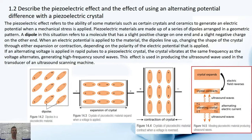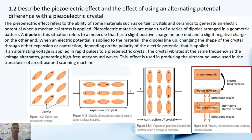Describe the piezoelectric effect and the effect of using an alternating potential difference with the piezoelectric crystal. The piezoelectric effect refers to the ability of some materials, such as certain crystals and ceramics, to generate an electric potential when mechanical stress is applied. You can see that on the diagram on the right hand side — when we have a vibrating crystal which is undergoing stress, there is an electric potential which is generated.